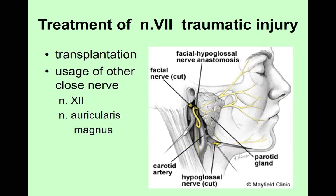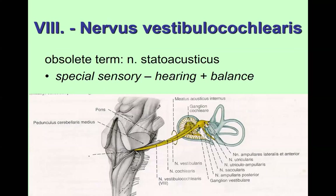The transplanted nerve serves only as a scaffold — a conduit — and the nerve fibers need to grow through it again. The speed of nerve fiber growth is only one millimeter per day, so recovery takes considerable time.